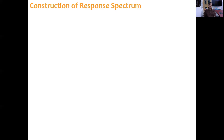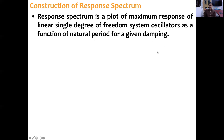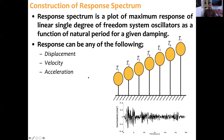To construct a response spectrum, it is a plot of the maximum response of a linear single degree of freedom system as a function of natural period, for a range of damping values. You take many oscillators — idealized linear single degree of freedom systems — having a range of natural periods, say from 0.005 seconds up to 10 or 20 seconds, subject them to one component of ground motion, and measure the maximum value using a method such as the Newmark method.